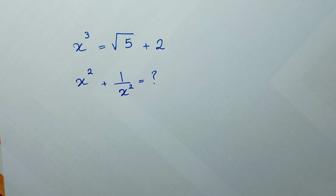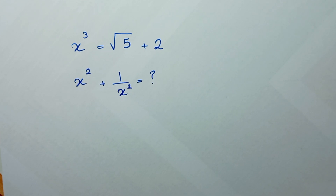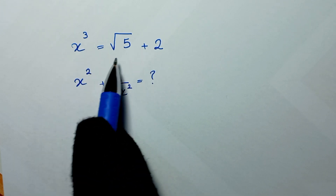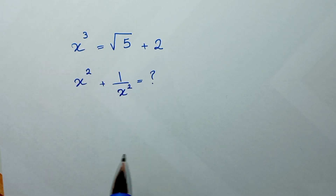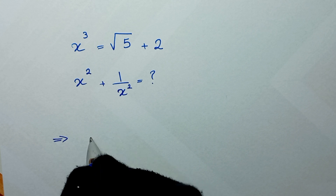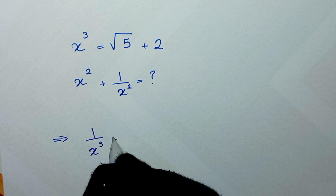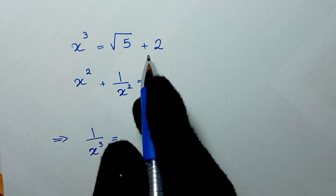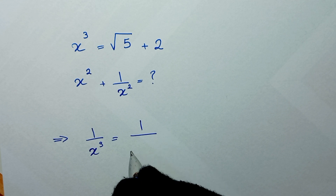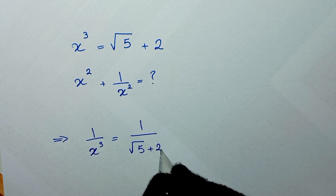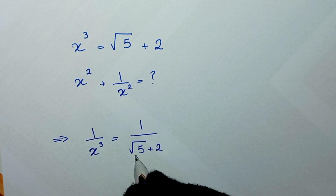In the first step, from this equation, we reverse both sides — so 1 over x cubed is equal to 1 over square root of 5 plus 2.